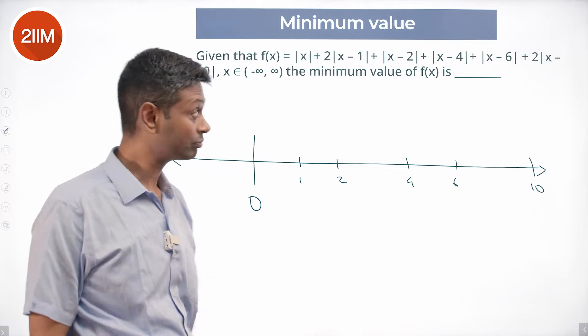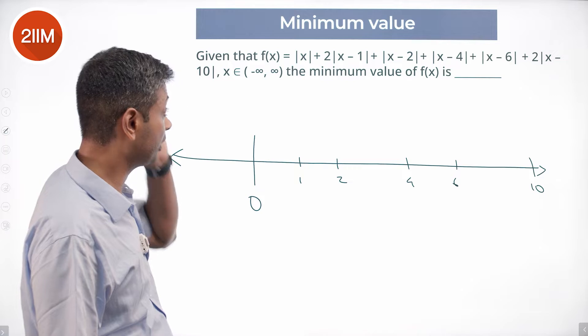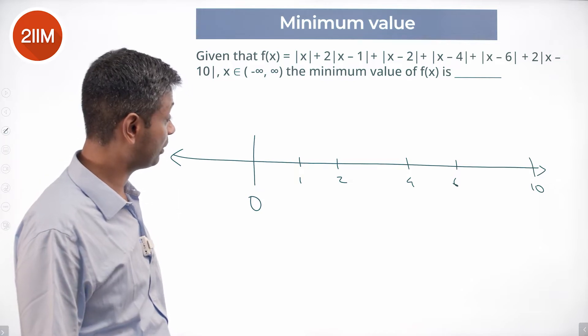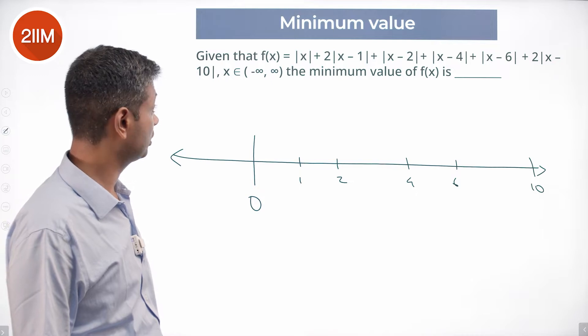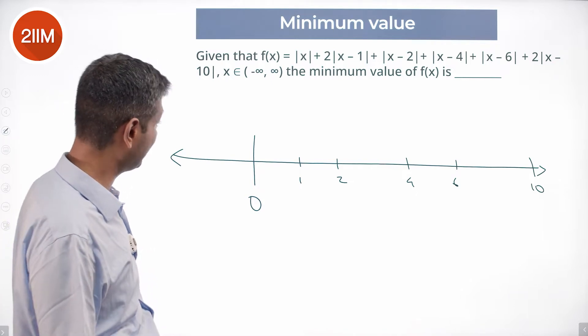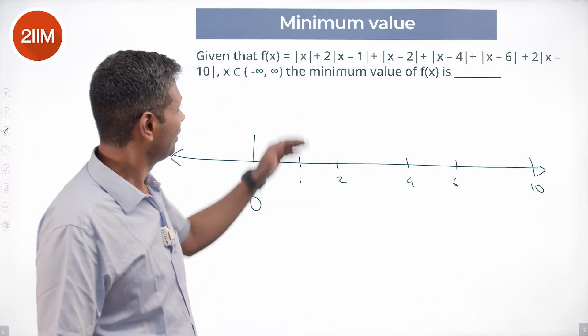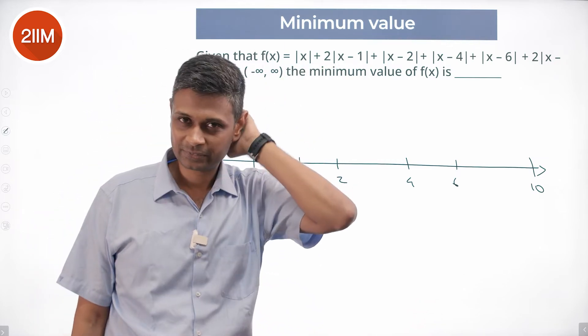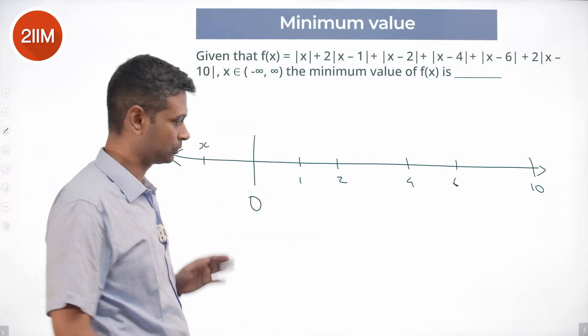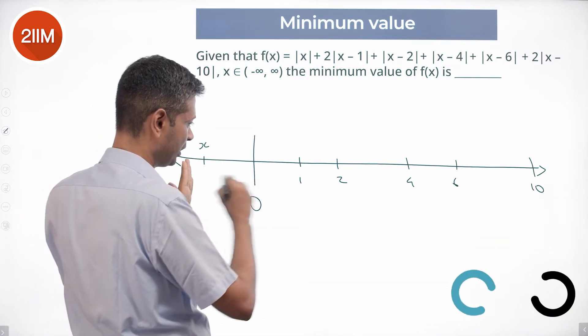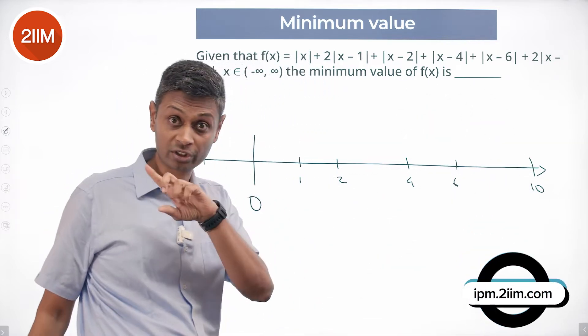F of X is modulus of X plus 2 times modulus of X minus 1 plus modulus of X minus 2 plus modulus of X minus 4 plus modulus of X minus 6 plus 2 times modulus of X minus 10. Nice. And so forget the 2 times part. Right. So suppose X were here. X minus 0, X minus 1, X minus 2, X minus 4, X minus 6, X minus 10. I'm calculating all these distances.